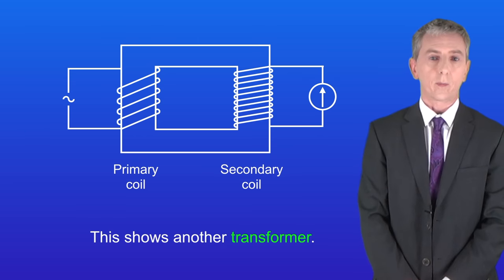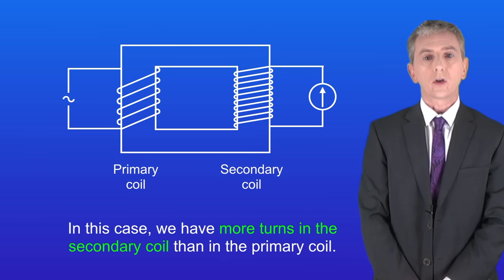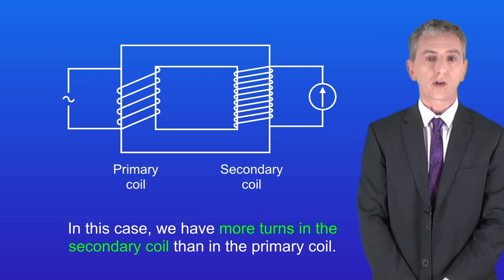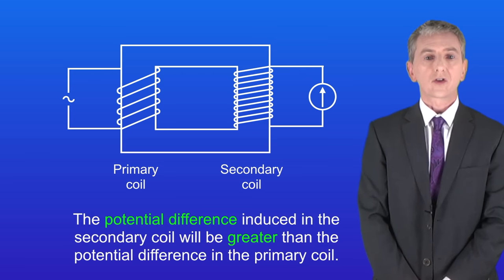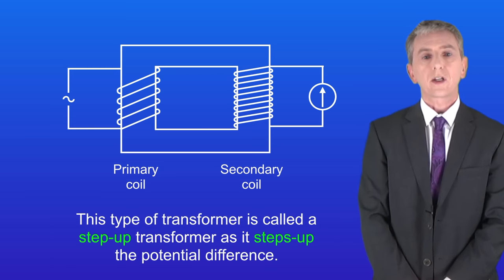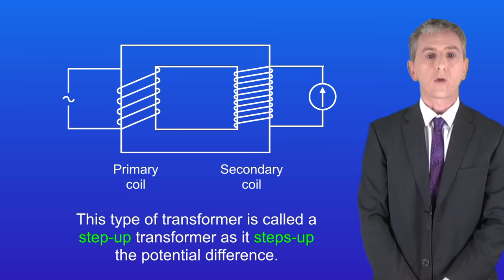I'm showing you here another transformer. In this case we've got more turns in the secondary coil than in the primary coil. This means the potential difference induced in the secondary coil will be greater than the potential difference in the primary coil. This type of transformer is called a step-up transformer.